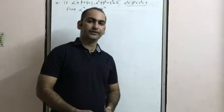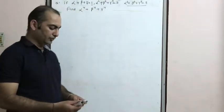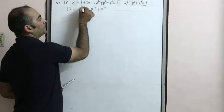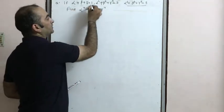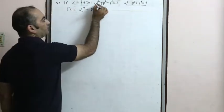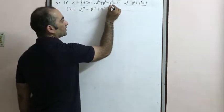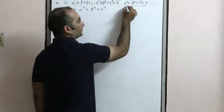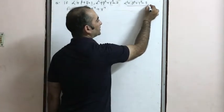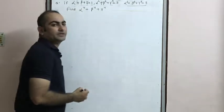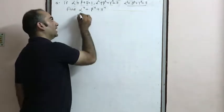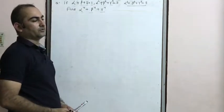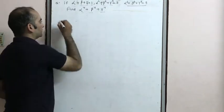Good morning everyone. Today we are discussing a new problem: if α+β+γ=1, α²+β²+γ²=2, and α³+β³+γ³=3, then find α⁴+β⁴+γ⁴.